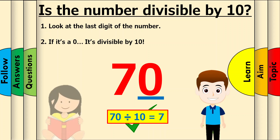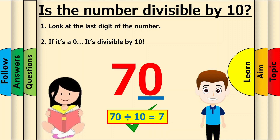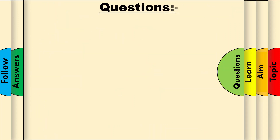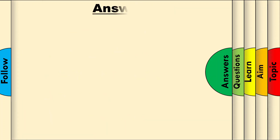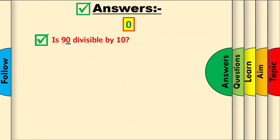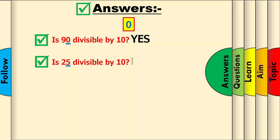Cool! Pause the video and answer these questions. Let's go through some answers. Look at the last digit of 90, which is 0. 0 is our special number, so the answer is yes. Using the same method, here are the following answers.